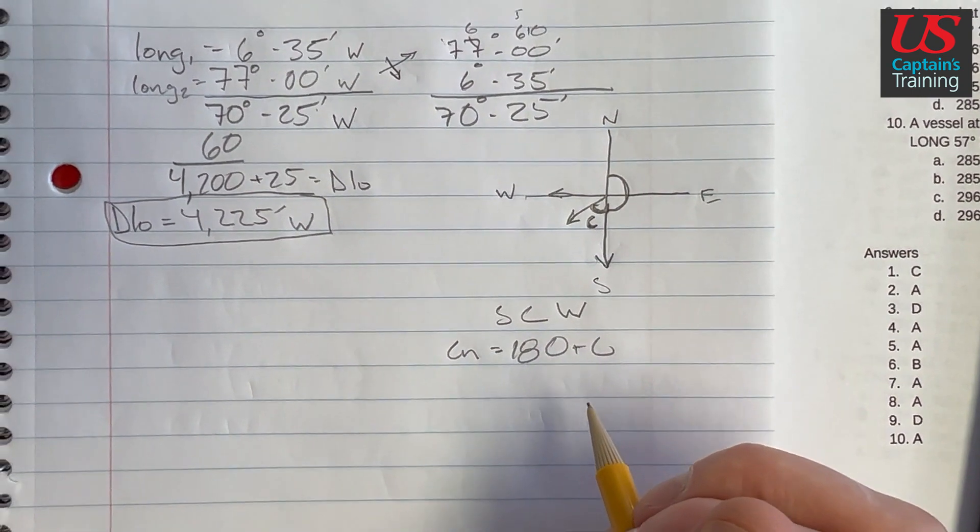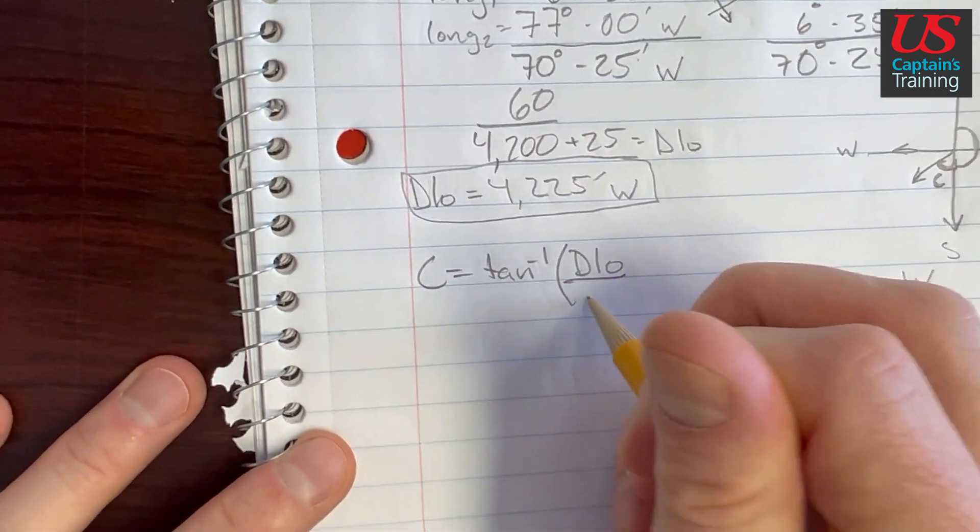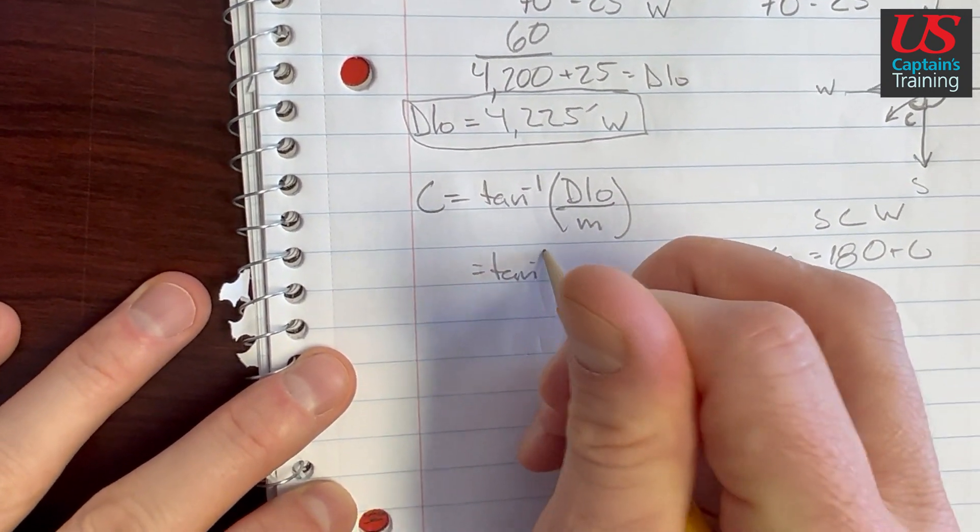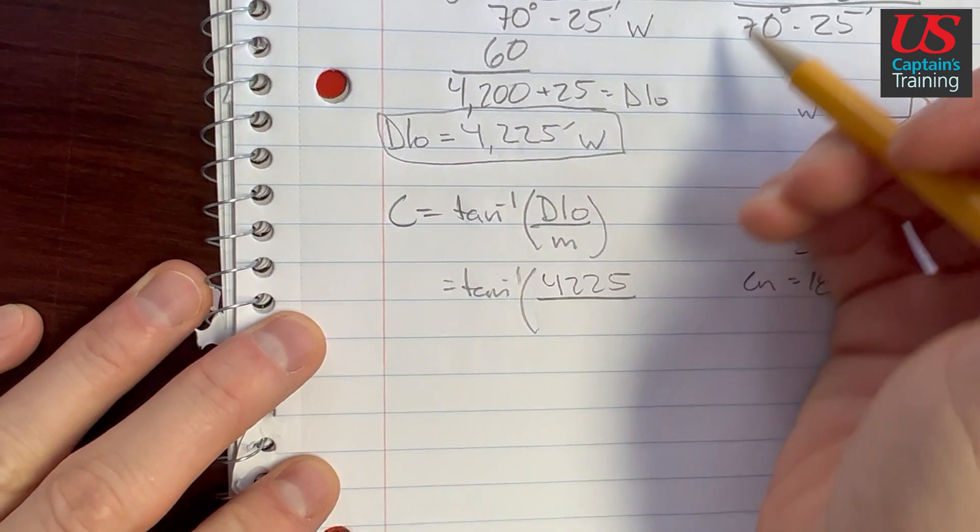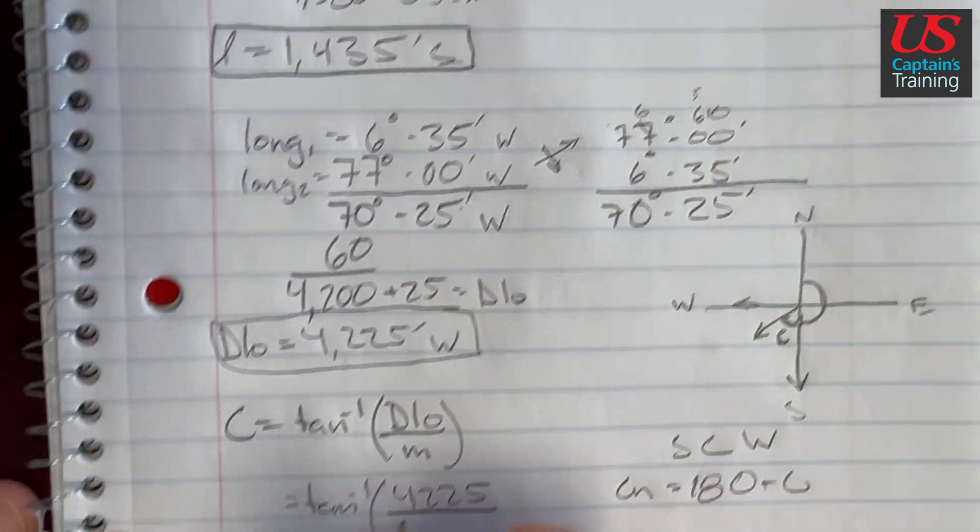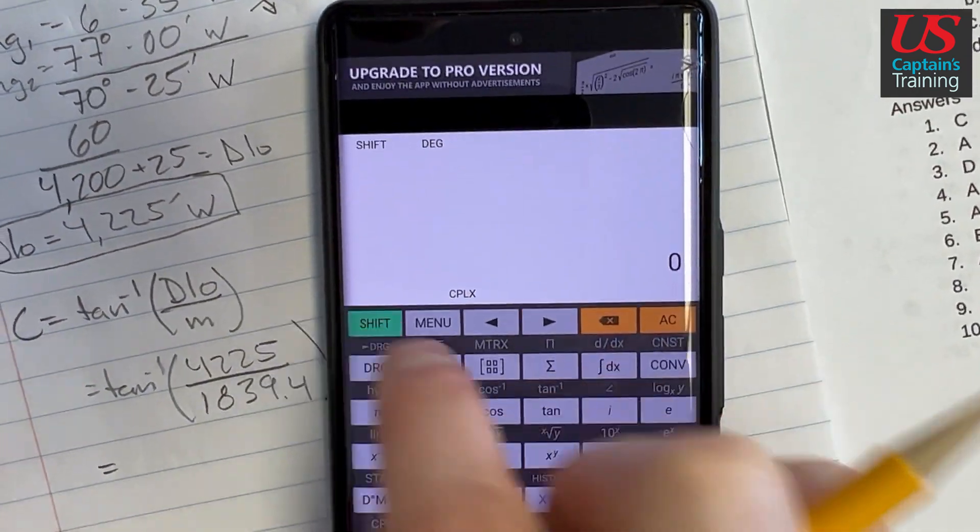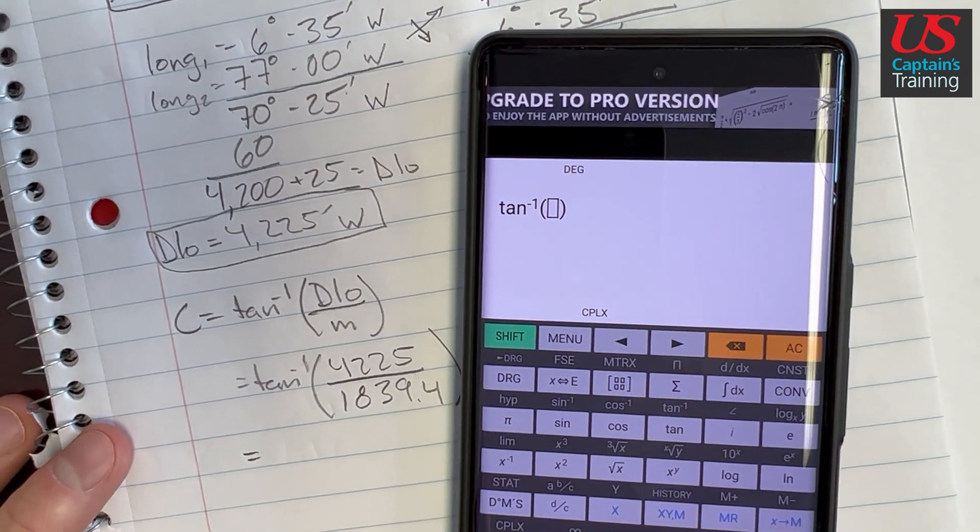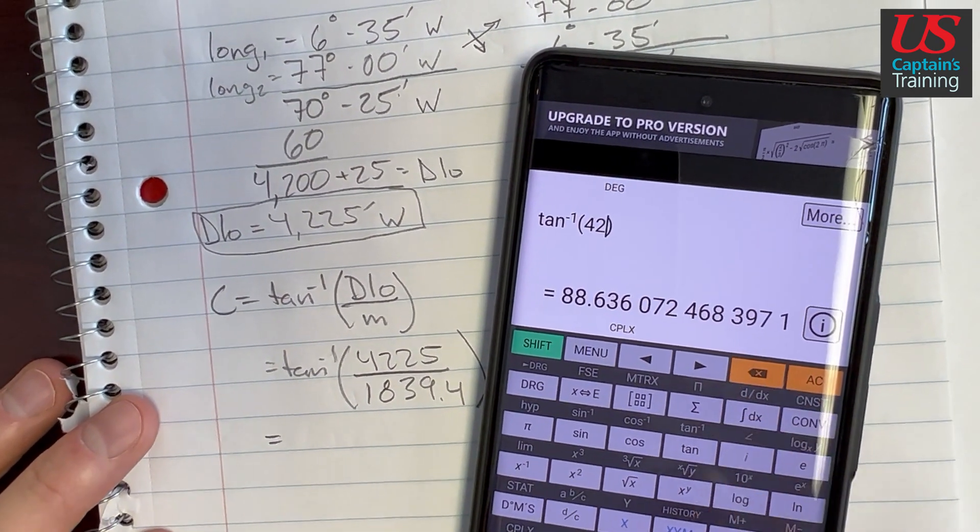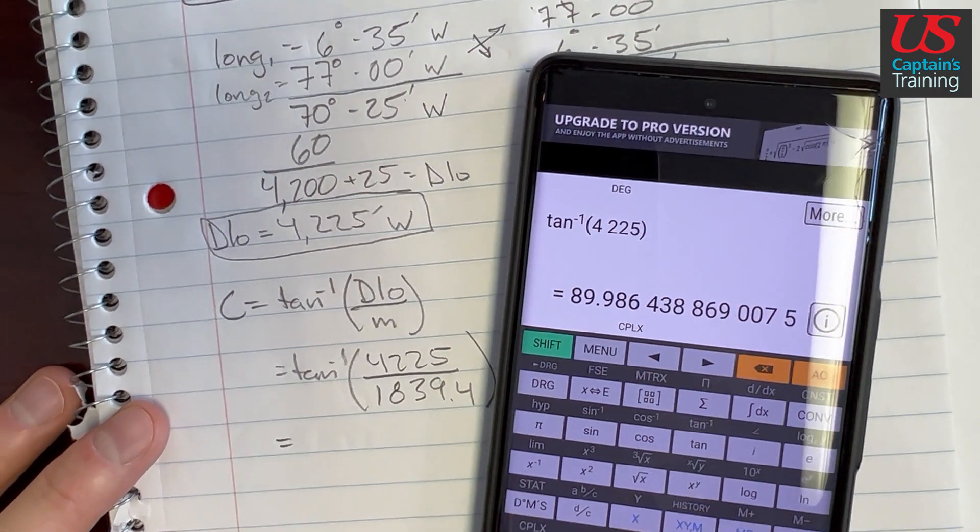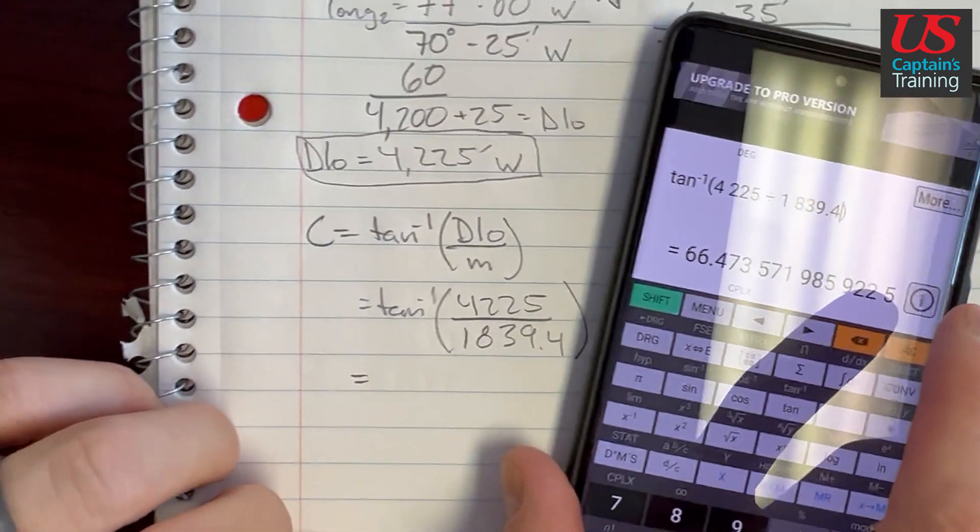So we'll get that in a minute. Let's get our course. Course is equal to tan inverse D low over M. It's equal to tan inverse, our D low is 4225, and our M is equal to 1839.4. So 4225 divided by 1839.4, 66.474.